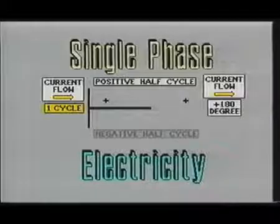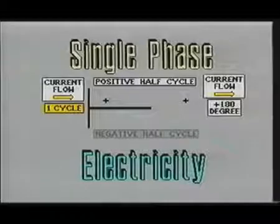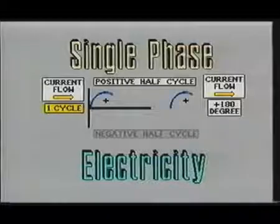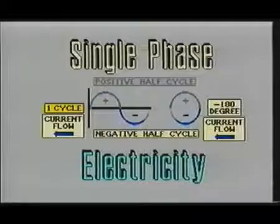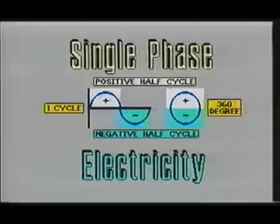We will begin our examination of three-phase electricity by first looking at one complete cycle of AC current. Notice that one cycle of electricity consists of 360 degrees which can be divided into two 180 degree divisions called alternations.